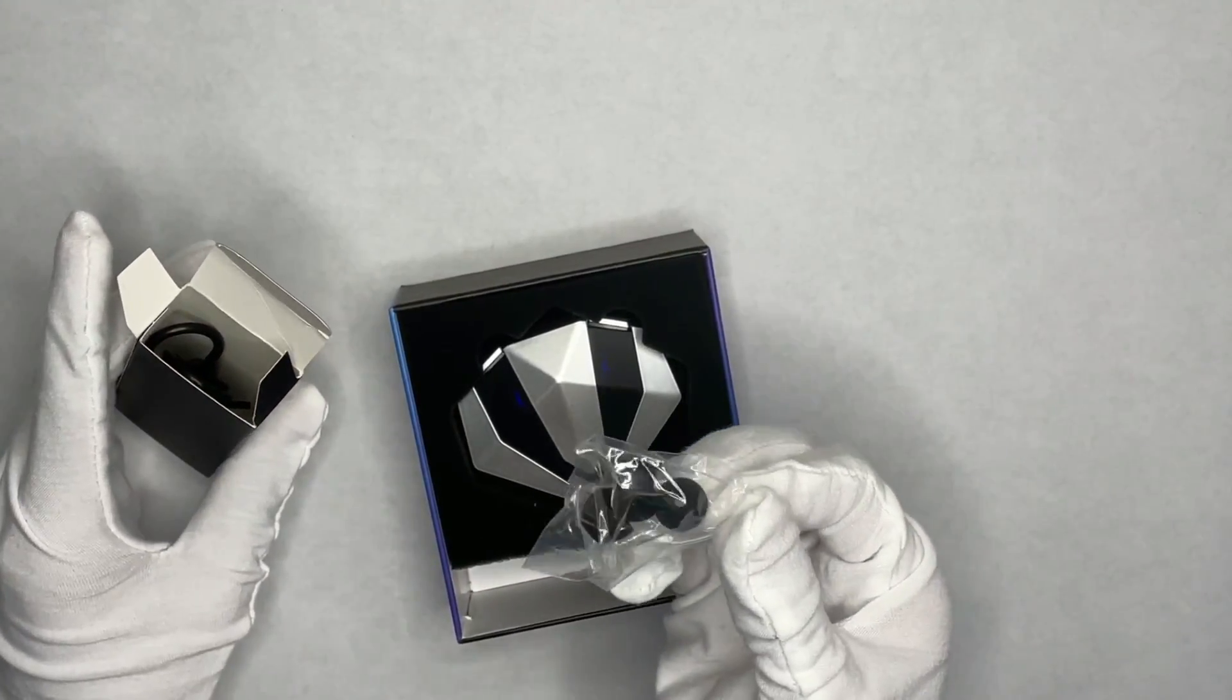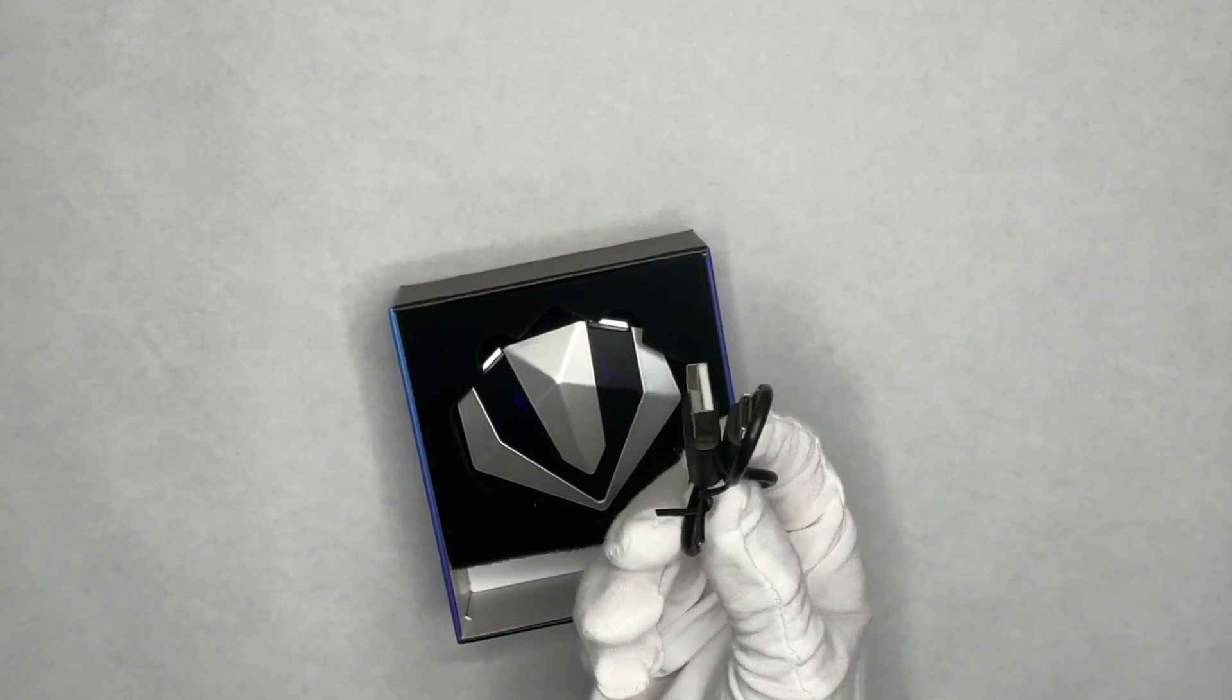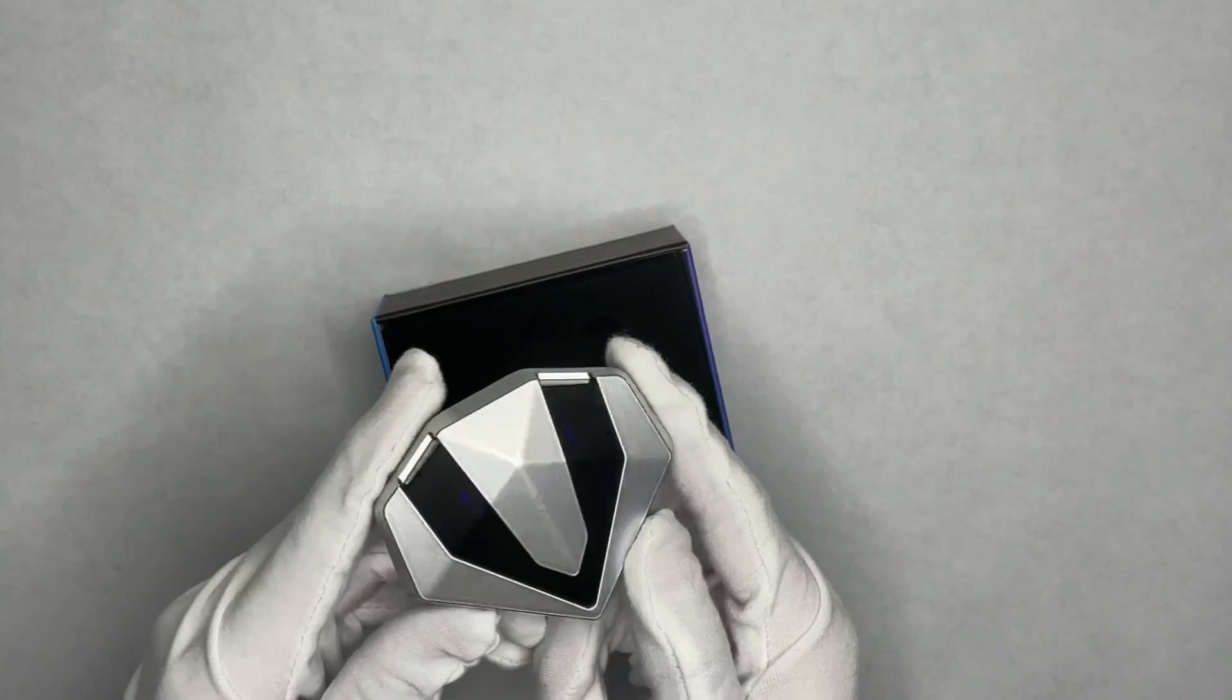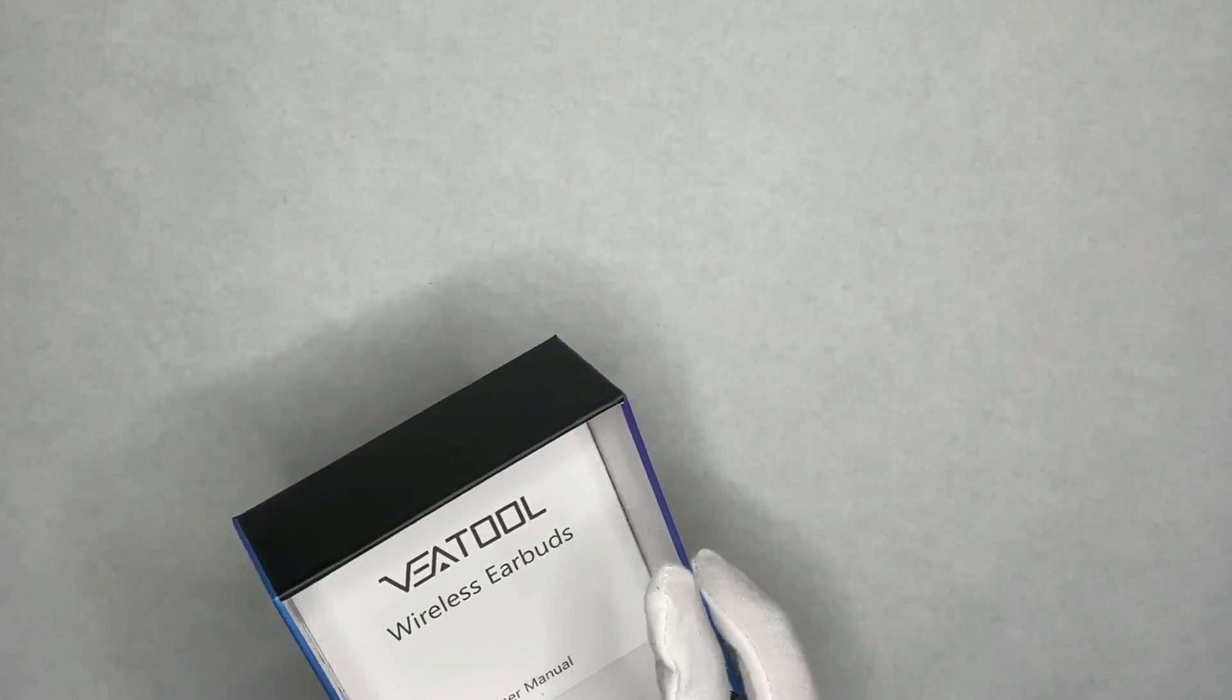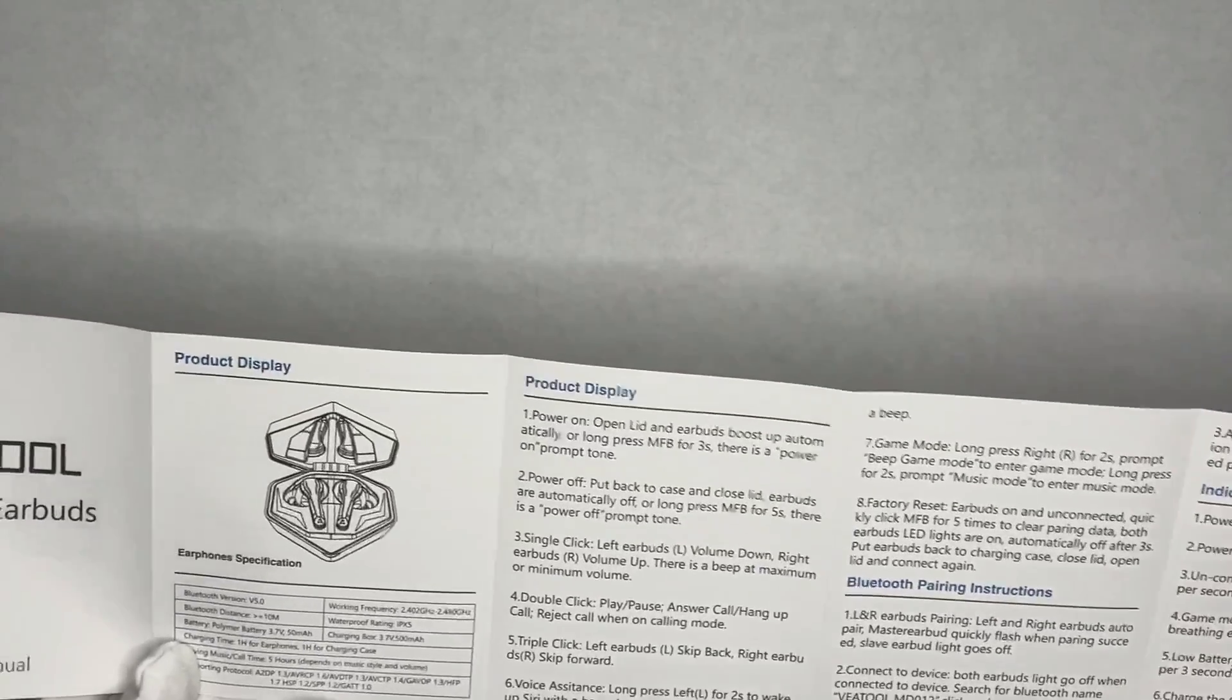You have some earbud silicone tips, large and small. And then you also have a charging cable, USB type-C to USB-A. Then right here you have the earbuds themselves. And on the bottom you have the user manual with very clear instructions on how to set them up.